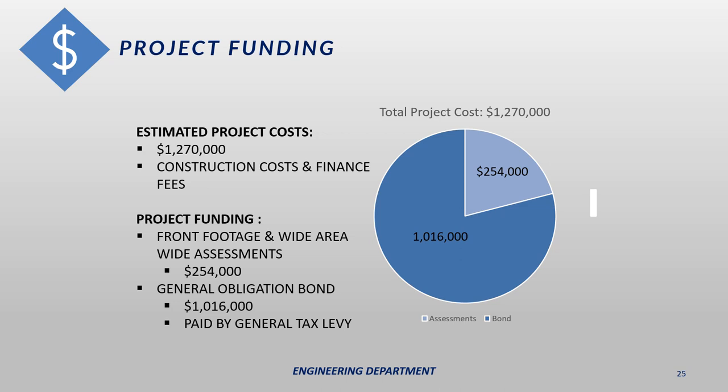When the city does projects like this, we typically get a lot of questions related to funding. We've estimated the project will cost approximately $1.27 million. That includes all costs associated with construction as well as fees associated with financing the project. The funding comes from two sources: special assessments and general obligation bonds. Special assessments on this project will come in two types — front footage assessments and an area-wide assessment. The area-wide assessment is applied because of 20th Avenue South, which is functionally classified as a collector roadway. The assessments are expected to generate approximately $254,000, or 20% of the project cost. The remaining 80%, roughly $1 million, will be funded through general obligation bonds obtained on the open market, paid through the city's general tax levy fund.